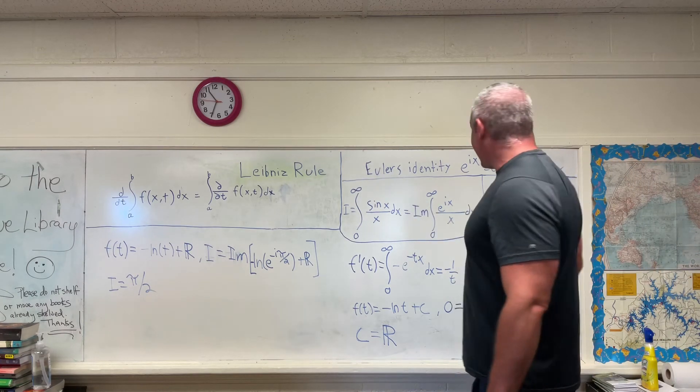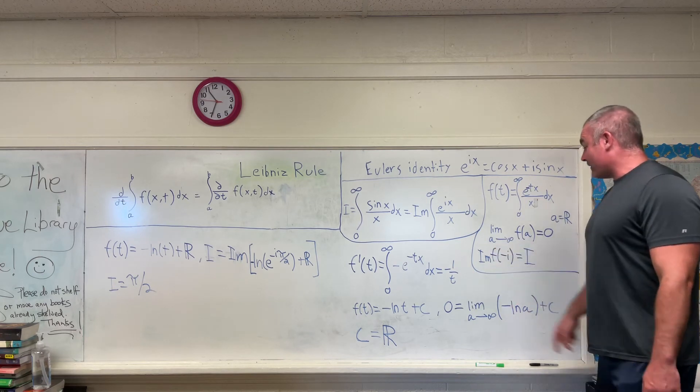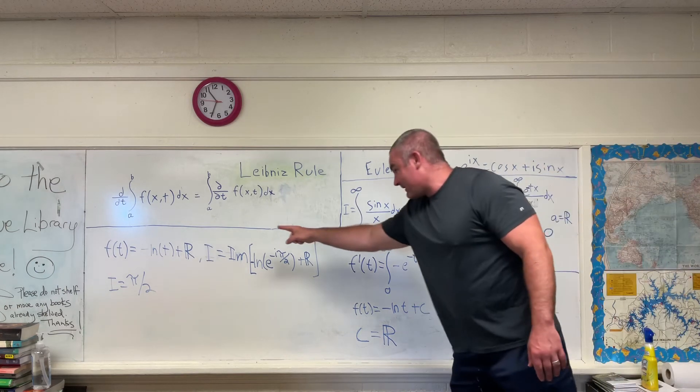So now we have f of t being equal to the negative natural log of t plus some real number. Therefore, we can set i equal to the imaginary part of our function of t if you evaluate that function at negative i. And that's stated right here.